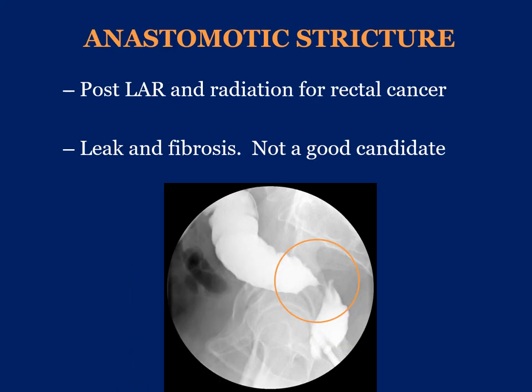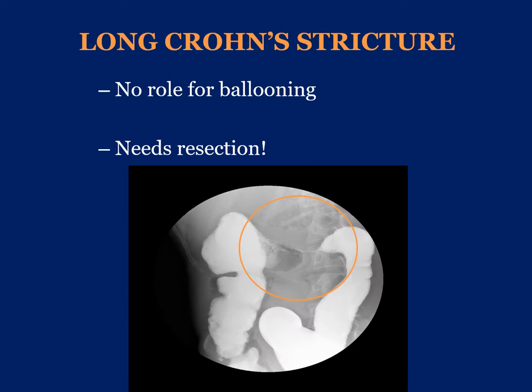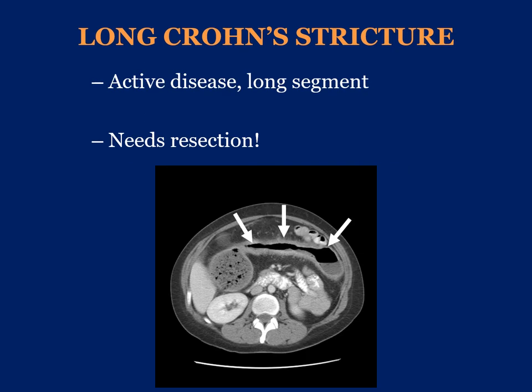In this patient with a history of rectal cancer, prior radiotherapy to the pelvis, and a previous anastomotic leak following low anterior resection, there is significant fibrosis and a persistent diverticulum posteriorly. This patient is not a good candidate and will not respond to balloon dilatation. In another case of Crohn's disease with a long segment of transverse colon completely strictured, there is no role for balloon dilatation, and this patient should be taken to the operating room for resection. A further Crohn's case with significant inflammation and active disease in a long segment would benefit from colectomy.